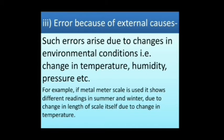Error because of external causes: such errors arise due to changes in environmental conditions, i.e., change in temperature, change in humidity, or pressure, etc. For example, if a metal meter scale is used, it shows different readings in summer and winter due to the change in length of the scale itself caused by change in temperature.